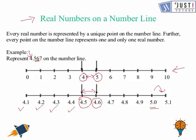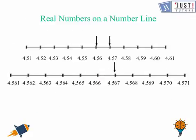Now we move ahead. And we can write the numbers in between 4.5 and 4.6 as 4.51, 4.52, 4.53, 4.54, 4.55, 4.56, 4.57, 4.58, 4.59, 4.60. This is same as 4.6 and the next would be 4.61.